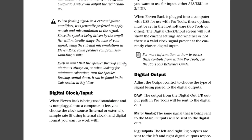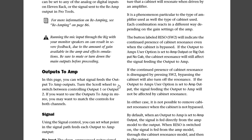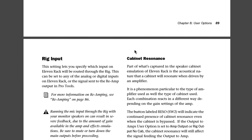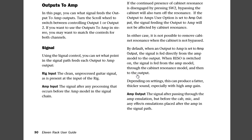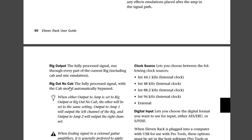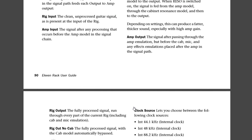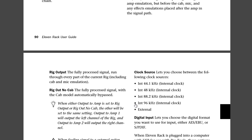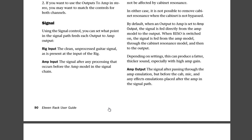By the way, with cab always off, you also have the option of cabinet resonance, which we're going to look at on the Avid 11 rack. And of course, rig out no cab — that's the fully processed signal with the cab model automatically bypassed. Just remember that rig out no cab is an option, and amp output is an option because that's before the cab and mic. Now let's head over to the 11 rack and check out cabinet resonance.